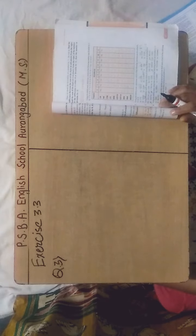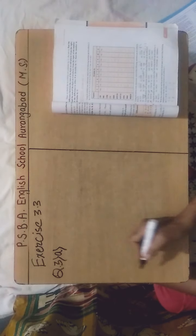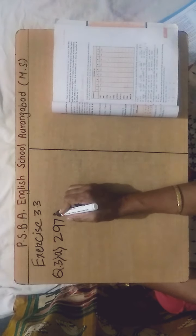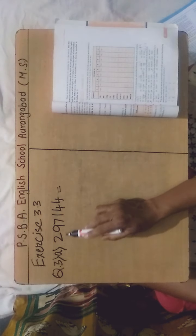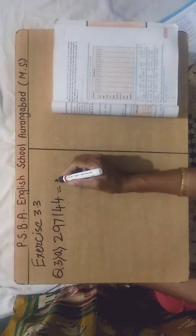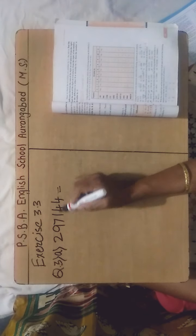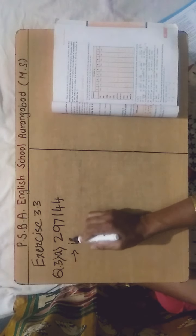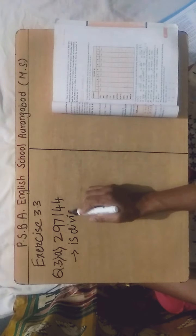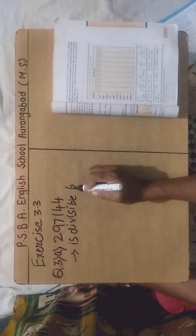In sub-question A, the number given to us is 2,97,144. This number is having 4 at its ones place, therefore it is divisible by 2. The sum of the digits will come: 2+9+7+1+4+4 = 27, which is divisible by 3. Therefore the given number is divisible by 6.